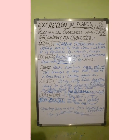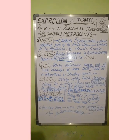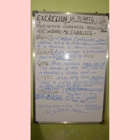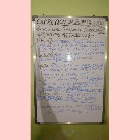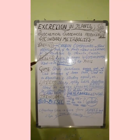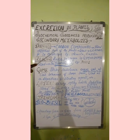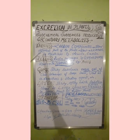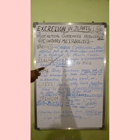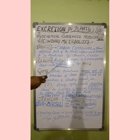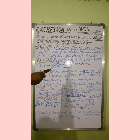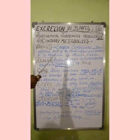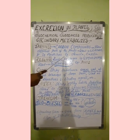In the last session we studied about alkaloids. Now let us see tannins. Tannins are carbon compounds stored in different parts of the plants. They are widely used in tanning of leather and medicines. Examples include acacia and cassia.